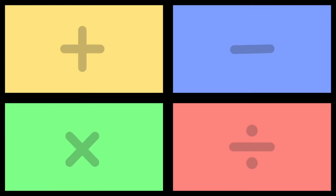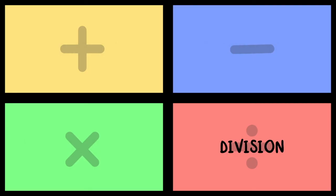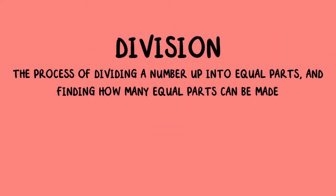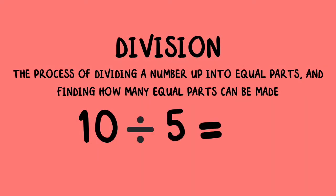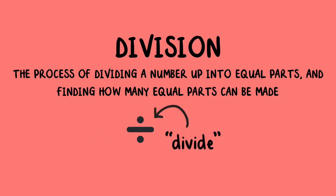The four operations of mathematics are addition, subtraction, multiplication, and division. Today, we're going to focus on division. Division is the process of dividing a number up into equal parts and finding how many equal parts can be made. For example, dividing 10 by 5 equals 2. It is most often represented by this symbol, meaning divide.